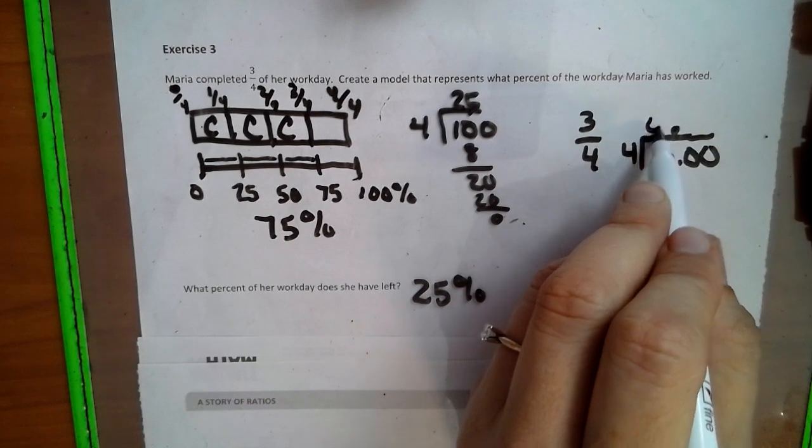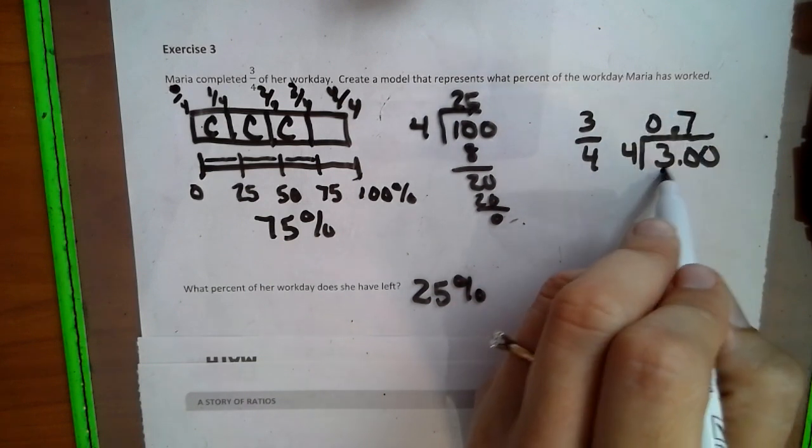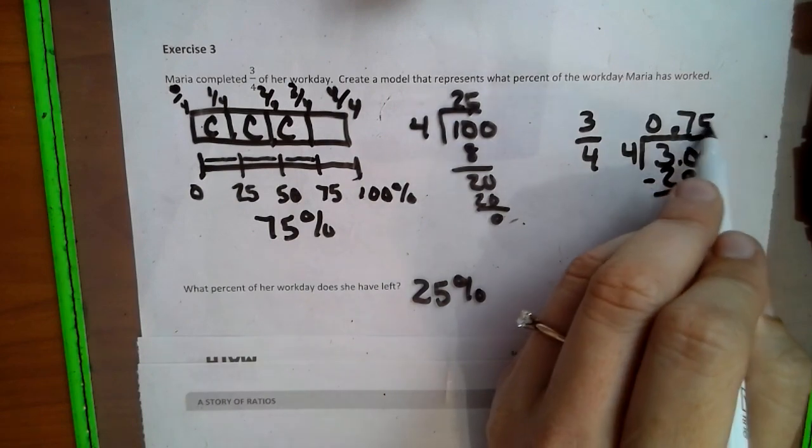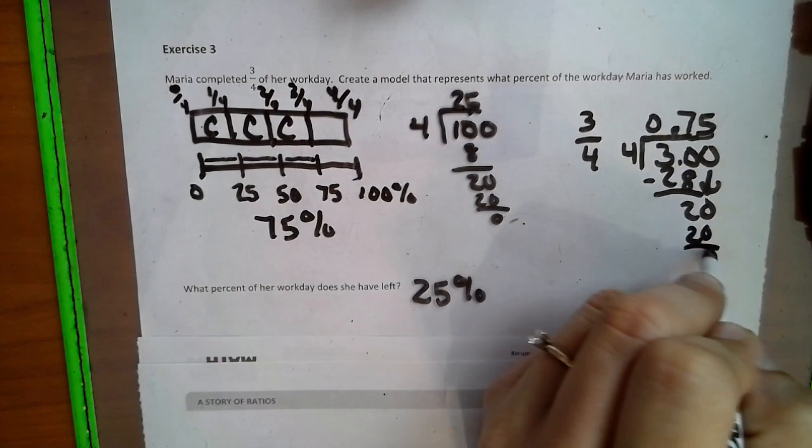Four can't go into three. Four goes into 30, seven times to make 28, two left over, bring down my zero, goes in five times, no left over.